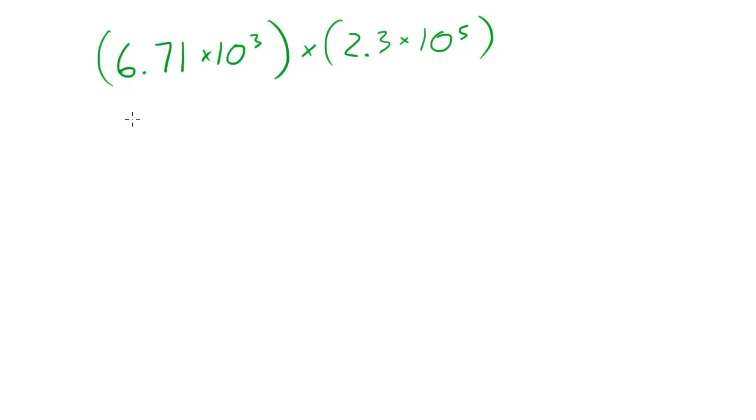So the first thing we need to do is take 6.71 and multiply it by this number right here which is 2.3. And then what we need to do is multiply that by this by this. What am I talking about? 10 to the third times 10 to the fifth. So basically these numbers times these numbers is going to give us our answer. So what is 6.71 times 2.3? Well the answer to that is 15.433.